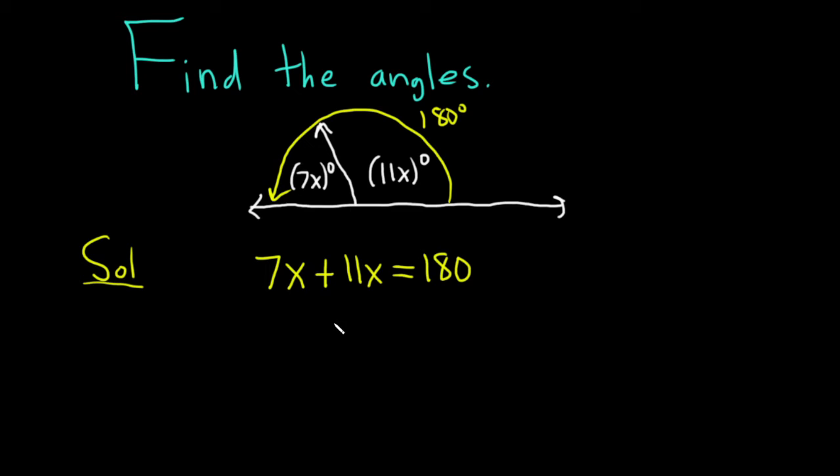7x plus 11x is 18x and that's equal to 180. And then to solve for x here we can just divide by 18 because it's being multiplied by 18. So divide, divide. We end up with x equals 10.